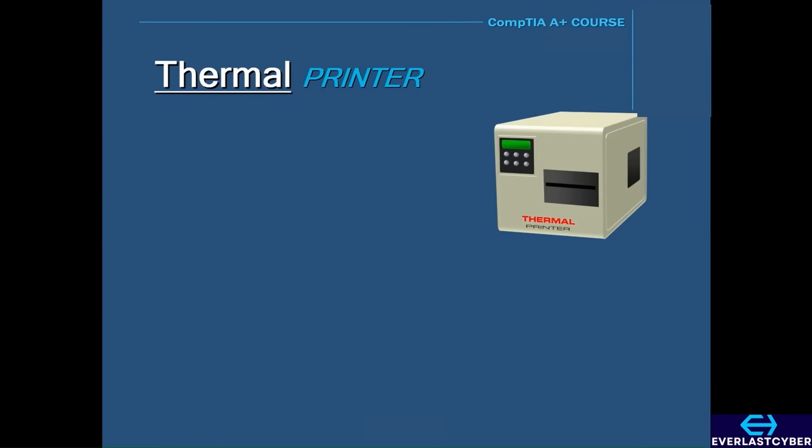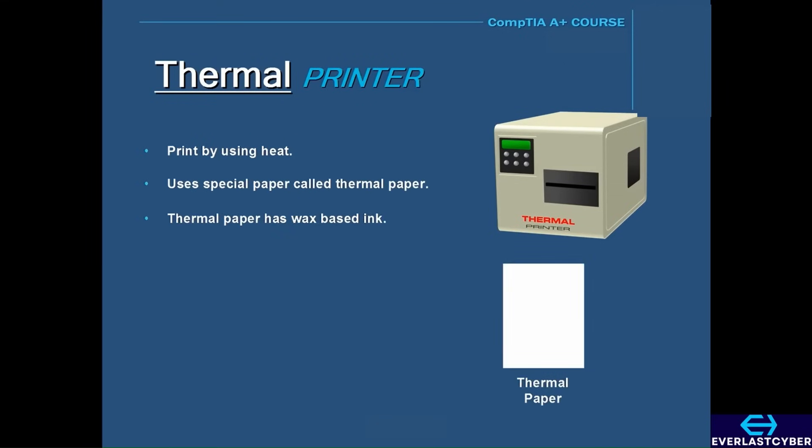Another non-impact printer is called a thermal printer. Thermal printers print by using heat. Thermal printers use special print paper called thermal paper, and on this thermal paper is wax-based ink, and when heat is applied to this ink it turns black.